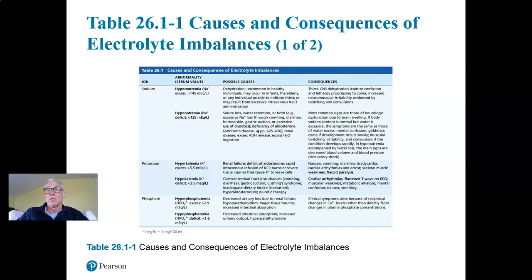Hyperkalemia can cause nausea, vomiting, diarrhea, and bradycardia. Too much potassium will interfere with the resting membrane potential and with repolarization of cells that depend on action potentials — such as heart cells and all the neurons in the nervous system. So there may be muscle paralysis, including skeletal muscles, since all those cells depend on the proper concentration of potassium.